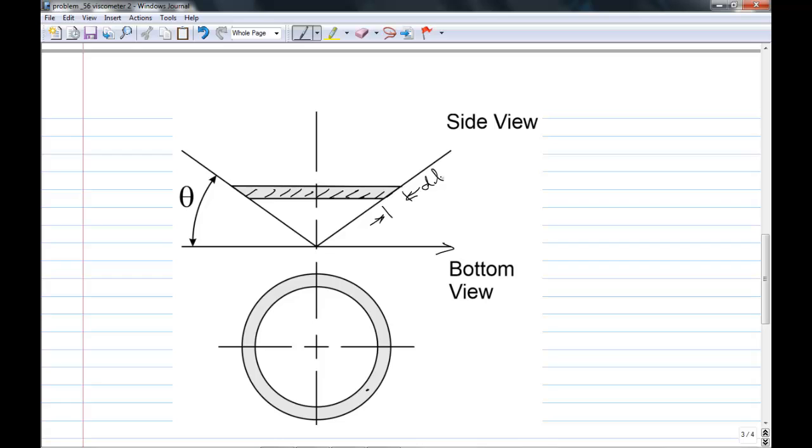And this little differential area has length along the side of the cone dL. And in the bottom view here, I've tried to show that area. And so if this cone is rotating in this direction, there'll be a shear stress tau opposing that on that area.